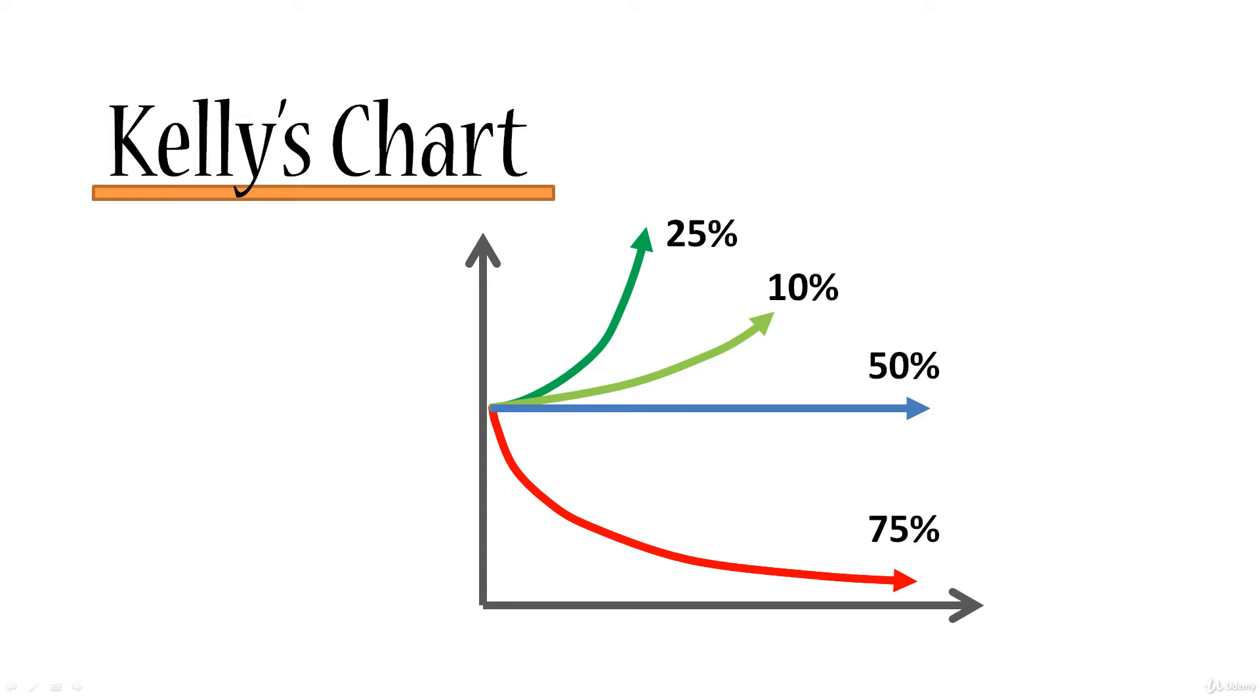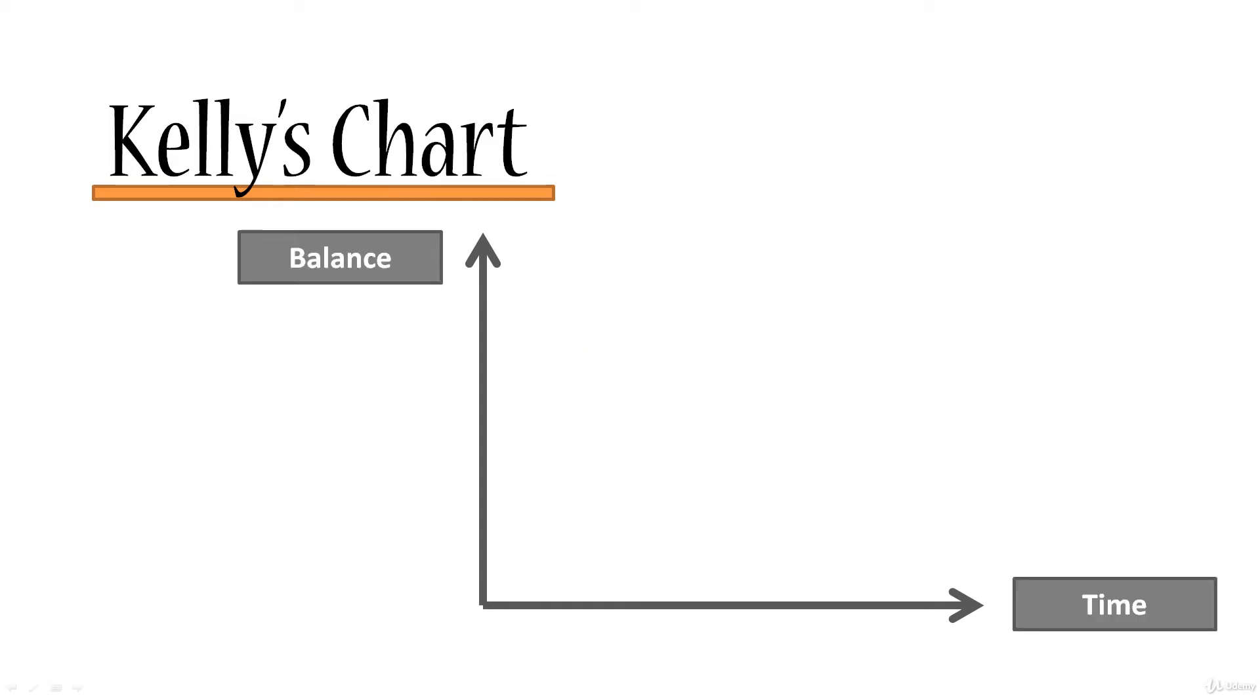We're plotting these results on a chart which on the horizontal axis has time and on the vertical axis has balance. So how will our balance change over time in the long run if we bet a certain percentage of our account on every transaction? If we bet 0% of our account balance on every coin toss or trade, obviously we will break even. Nothing will change.